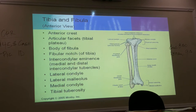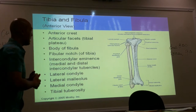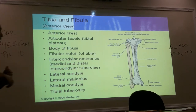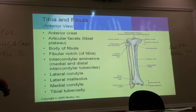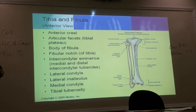Staying with the tibia, you have two bony projections that extend laterally and medially — those are your condyles. They also have very rough surfaces for more ligament attachments. When we discuss the knee, I'll show you those attachments.